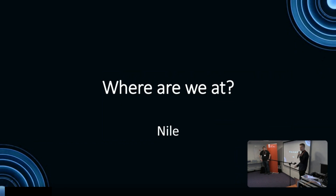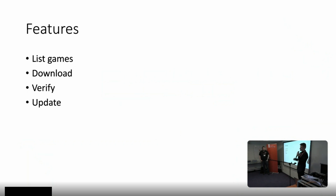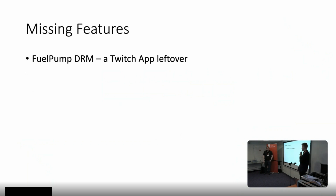Around Niall, Amazon Games doesn't really have that many features, so we split them into separate points just to make it look bigger. The listing of games, downloading, verifying, and updating - that's all their client supports. There is no cloud saves, no statistics, no playtime tracking (only locally). The only missing feature is a Twitch app leftover fuel pump DRM, and we don't actually have any games that use it at the moment.